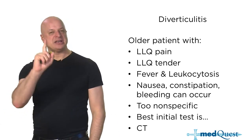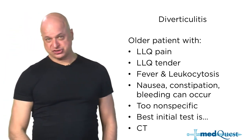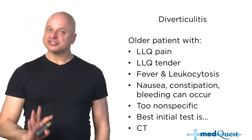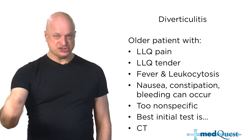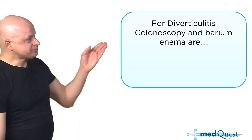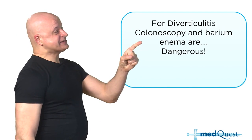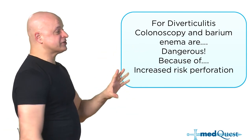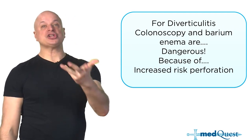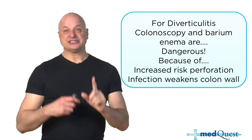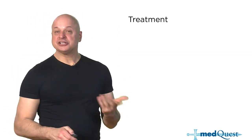What will an X-ray show in diverticulitis? Nothing. Abdominal X-rays are only good for small bowel obstruction and ileus, not for any diverticular disease. For diverticulitis, colonoscopy and barium enema are relatively contraindicated because of higher perforation risk. X-ray and sonogram are useless. The answer is CT scan, and the treatment is antibiotics.